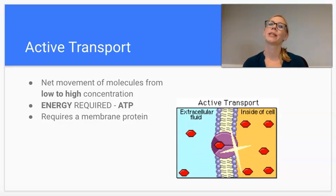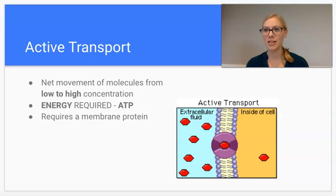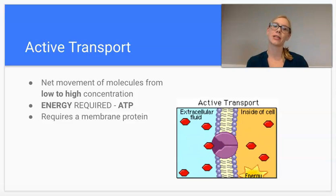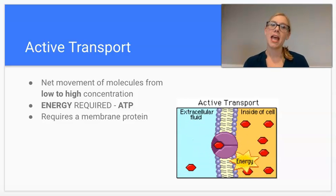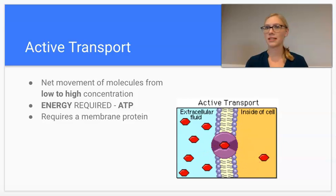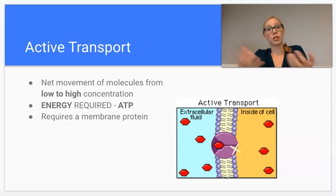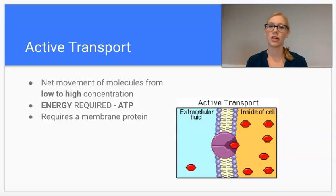Hi everyone, it's Mrs. Bustamante, and this is 2.6 and 2.7 part 2. We're talking about how things enter and exit the cell through the cell membrane. We've left off talking about passive transport that did not require energy — things just moved with the concentration gradient, or from a high concentration to a low concentration.